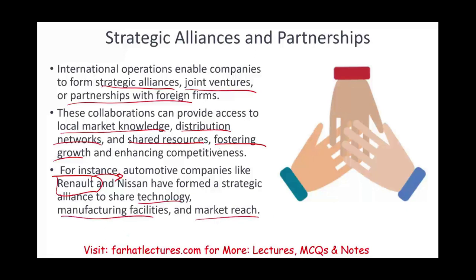Their CEO, Ghosn, got into trouble — if you're not familiar with the story, there's a show on Netflix. He was originally from Lebanon, escaped prosecution in Japan, and fled to Lebanon where he cannot be extradited because of his Lebanese citizenship. He was the person who formed the alliance between Renault and Nissan. It's a very interesting story — check it out on Netflix if you have time.